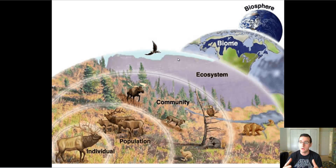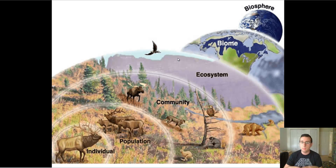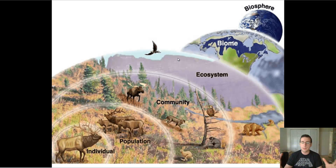And then you have biomes. Biomes include several ecosystems. For example, in the rainforest, you have the canopy, the understory, the rivers — all of these are ecosystems, which are part of the large biome called the rainforest. Now in the world there are many biomes, many types of ecosystems, and we call all of those put together the biosphere.